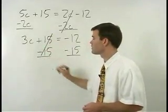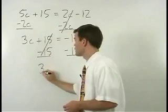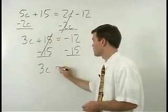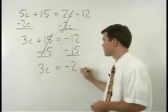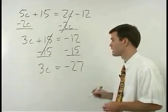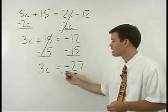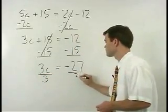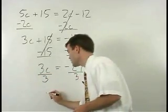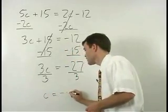On the left we have 3c and on the right negative 12 minus 15 is negative 27. To get c by itself just divide both sides by 3 and c equals negative 9.